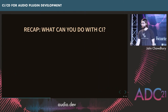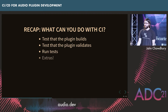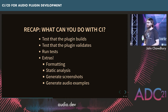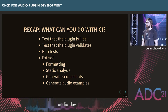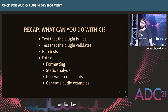To recap, what are some things we can do with continuous integration? We can make sure our plugin builds, make sure it validates, and run our tests. There are also fun extra things: you could enforce code formatting, run static analysis, maybe generate screenshots for your manual or website automatically, or generate audio examples for your website. I'm sure there are tons of other creative ideas people will come up with. Those are just a few things you can do with CI, along with the more crucial ones.